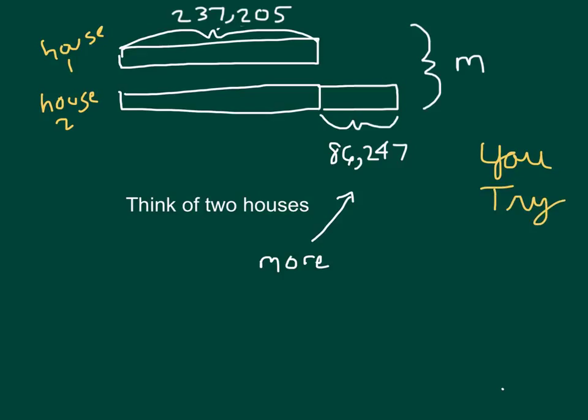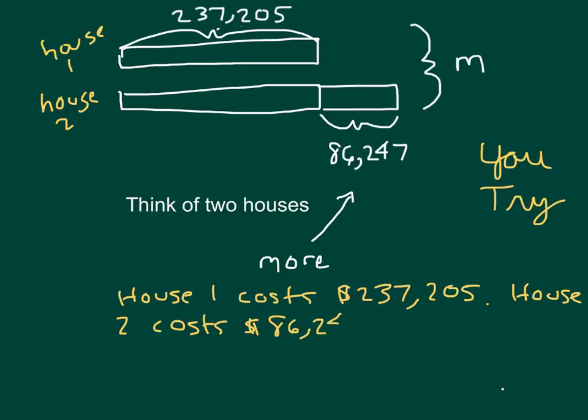Pause that video while you write it out. So we have two houses, and we know what the first one costs. House two costs $86,247 more than house one.